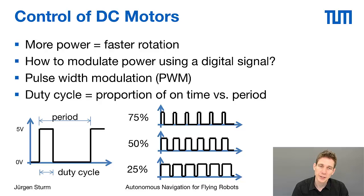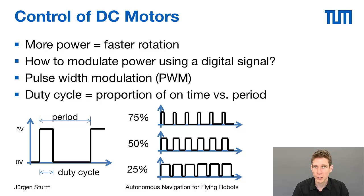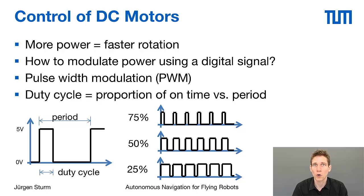This digital signal then needs to be amplified using a MOSFET, for example, to actually generate the high current that you need for powering the motors.